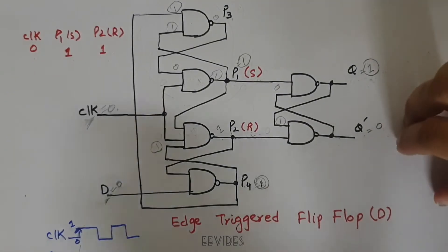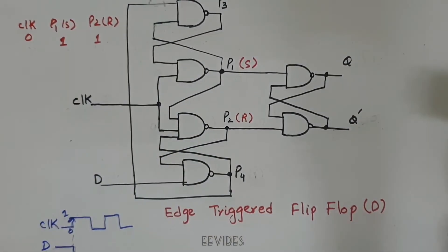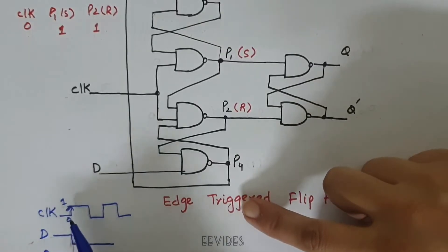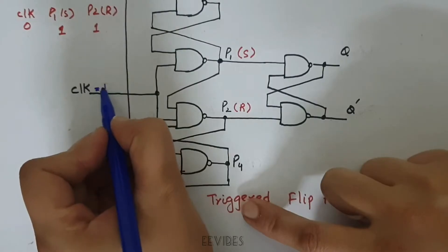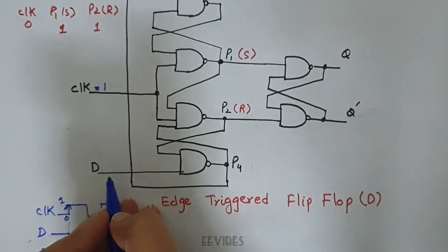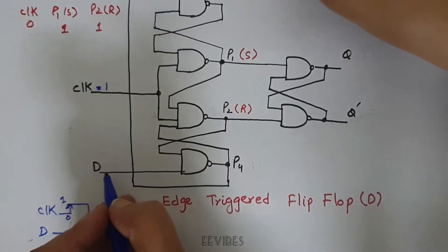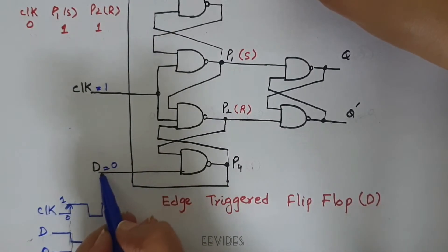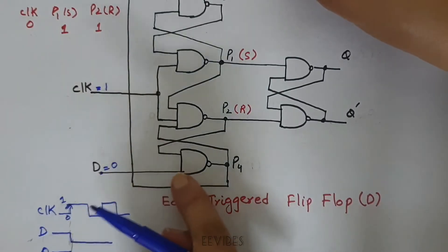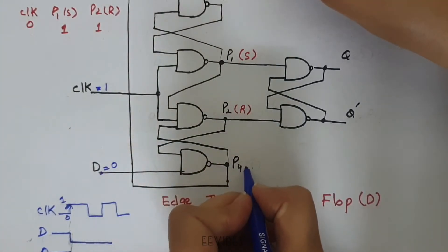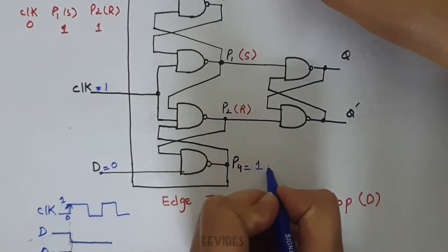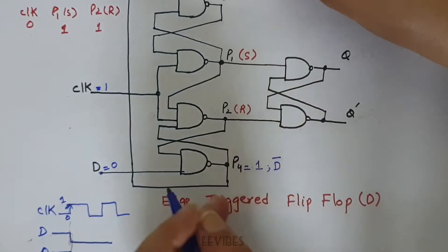Now let's see what happens when you make the clock signal equal to 1. We are going to switch the clock signal from 0 to 1. If D is equal to 0, once you have set data input D equal to 0, it will force P4 to be equal to 1 — in other words, P4 is equal to the complement of D.